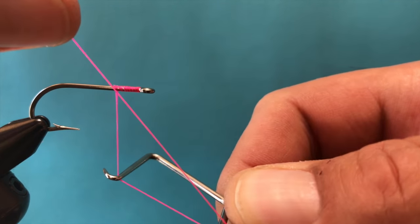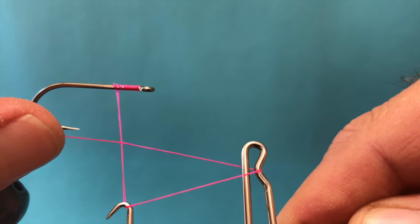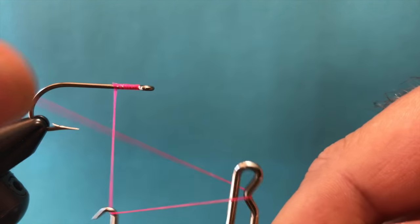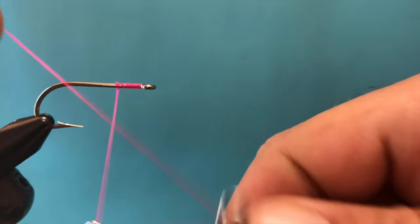Now, allow the whip finisher to rotate so that the thread forms a triangle like this. Let's do that one more time. Frisbee hook, bottom hook, form the triangle.